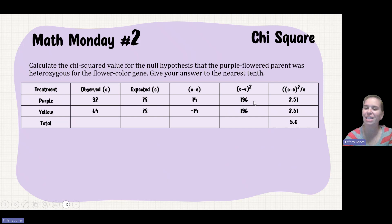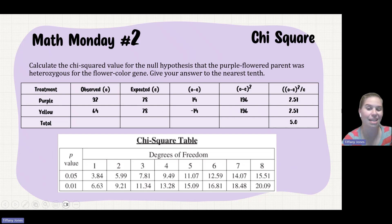I square that, giving 196. And then I divide by my expected. So this column divided by this column. And that gives me the exact same value.